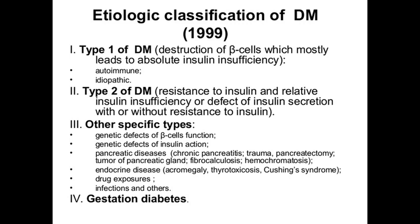Other endocrine diseases, as we discussed, such as acromegaly, thyrotoxicosis, Cushing's syndrome, or gigantism, can also result in hyperglycemia and diabetes mellitus. Also maybe drug exposure, which drugs we already discussed, and sometimes infections - mostly viral infections. The fourth type is gestational diabetes, which occurs in pregnant women.